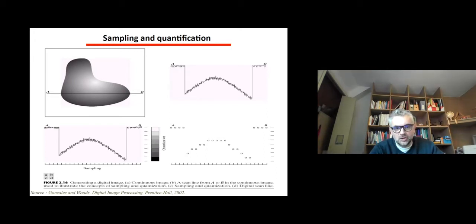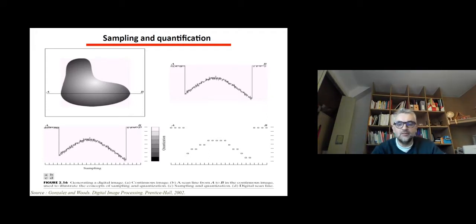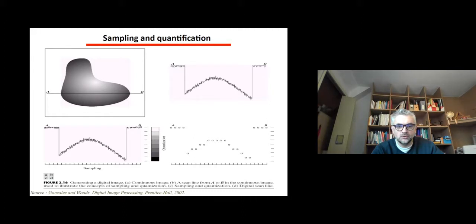There is a second level of quantification which is the quantification of the gray levels. We don't have an infinite number of gray levels. This is constrained by the number of bits on which we're going to store or encode the data. For n bits you have access to 2 to the power of n gray levels.